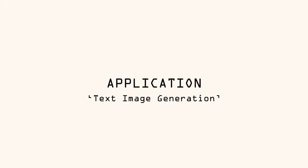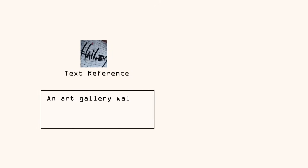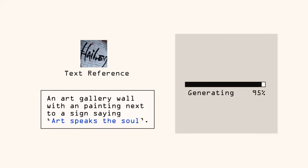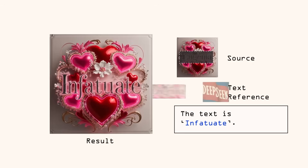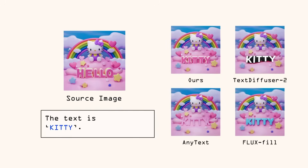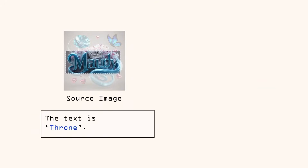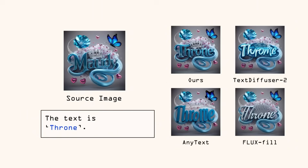The creative potential here is just endless for graphic designers and artists. Check out this application: you give it a reference style like a 'Haley signature' and ask it to generate 'Art Speaks the Soul' on a gallery wall — it perfectly mimics the handwriting. Here are more results: it can take any text reference and apply it to any prompt. Just look at this comparison — a Hello Kitty source image. When prompted to write 'Kitty,' Text Diffuser 2 is okay but flat, and AnyText and Flux Fill are just a mess. But Calligrapher nails the puffy, cute, 3D aesthetic of the original image — it's a night and day difference. In another example, the source image has 'Maudie' written in a certain style. When asked to write 'Throne,' the other AIs get the letters right but the style is all over the place. Calligrapher's result is clean, crisp, and perfectly matches the reference.